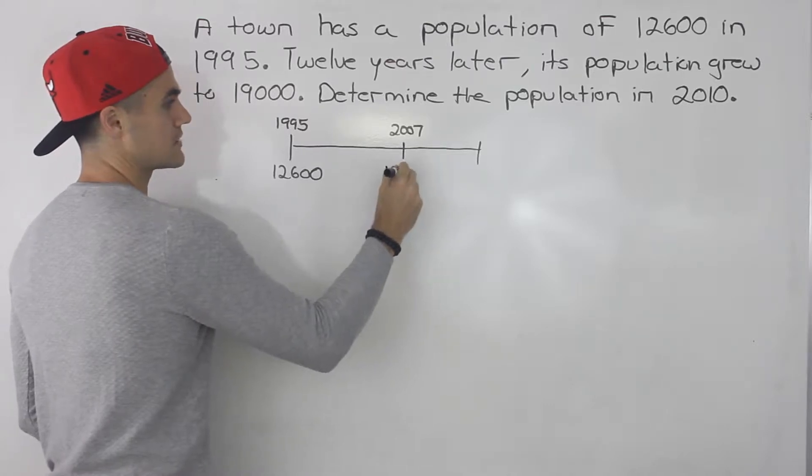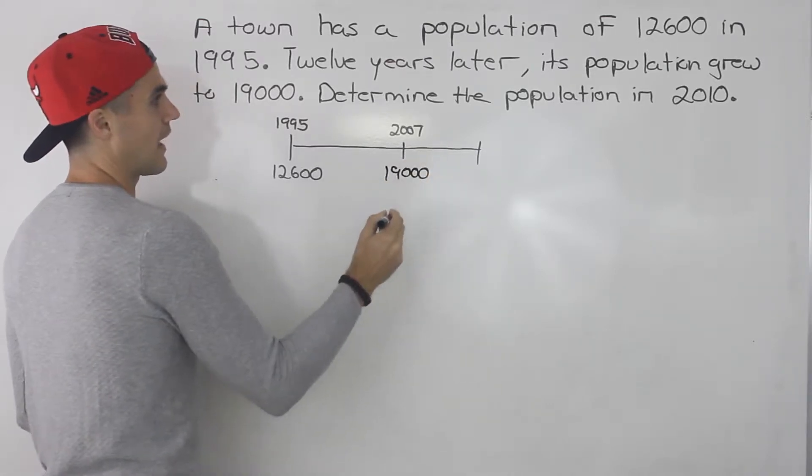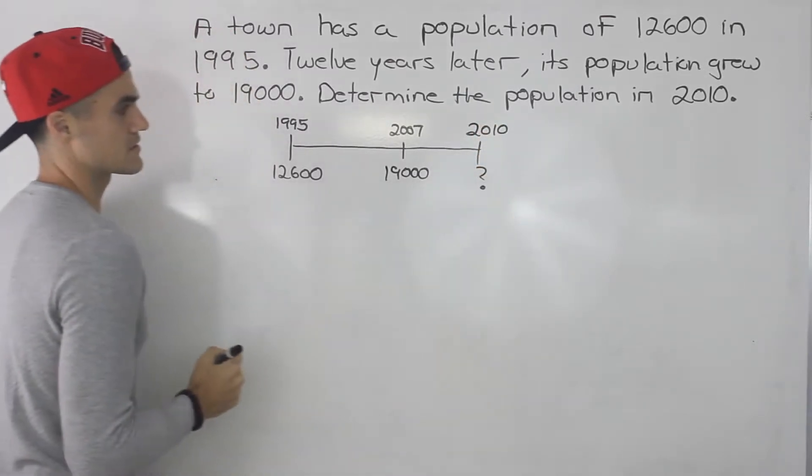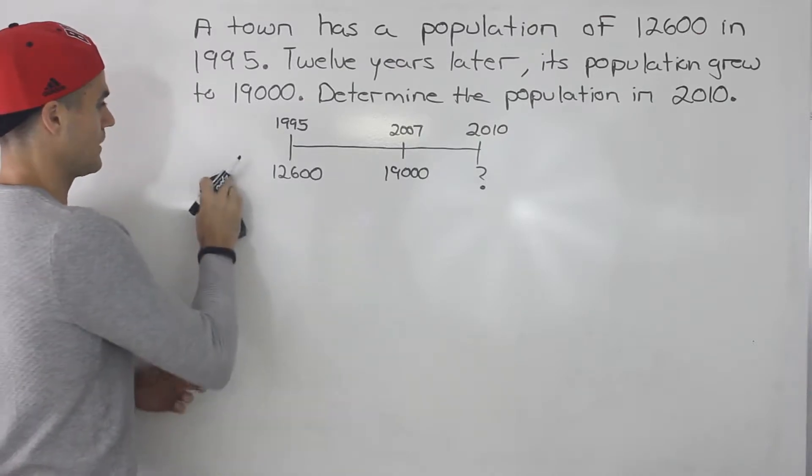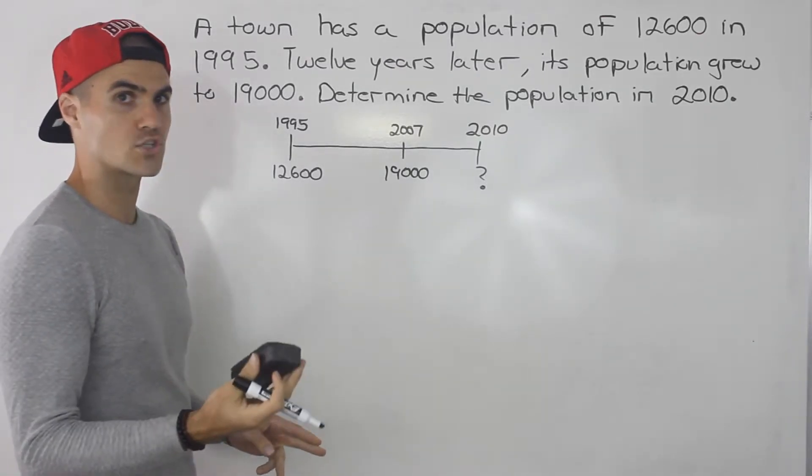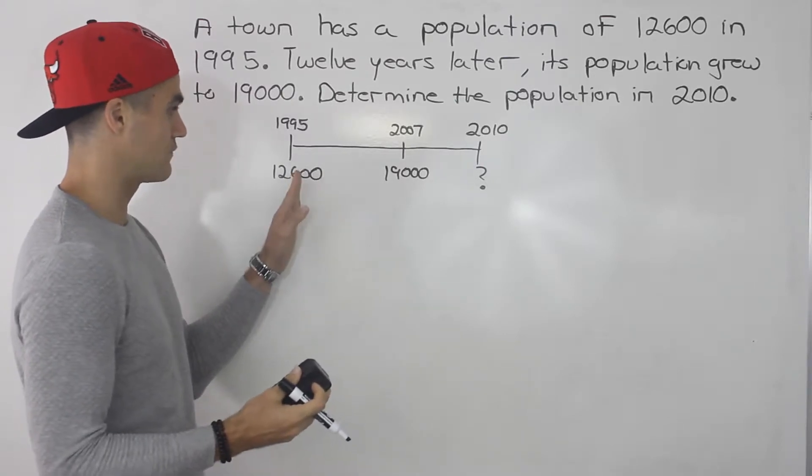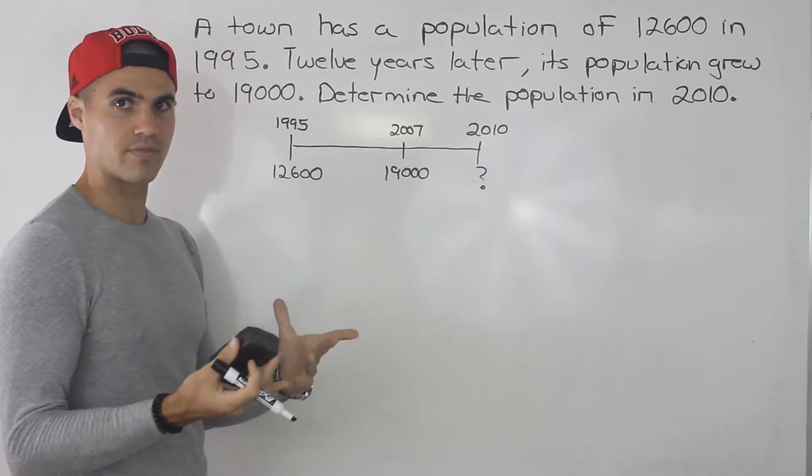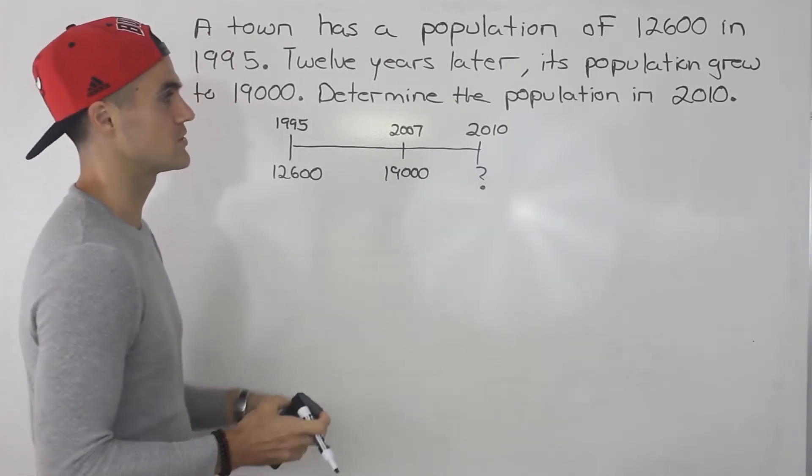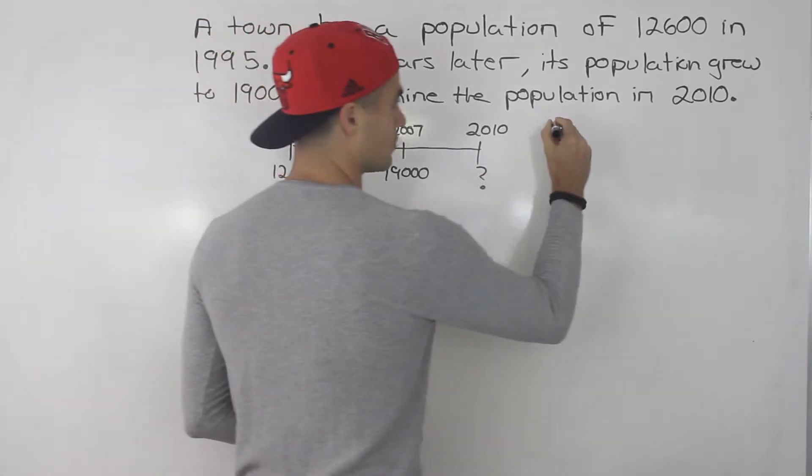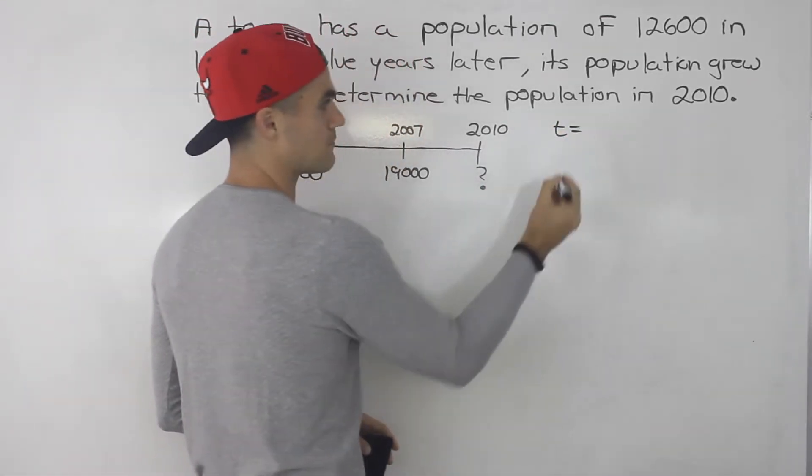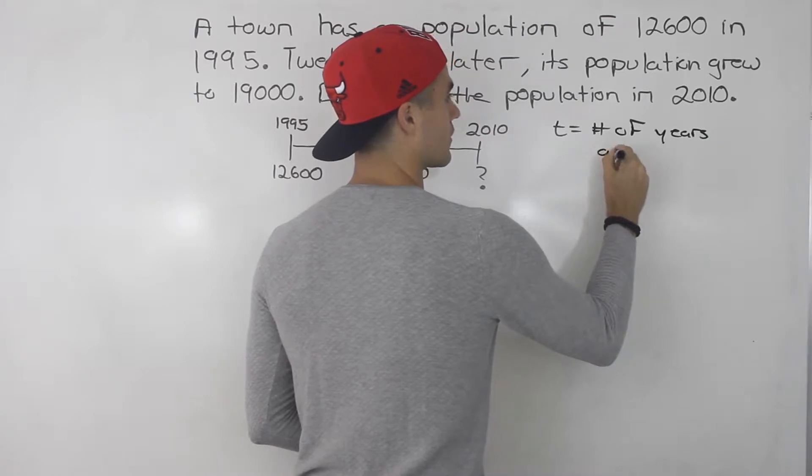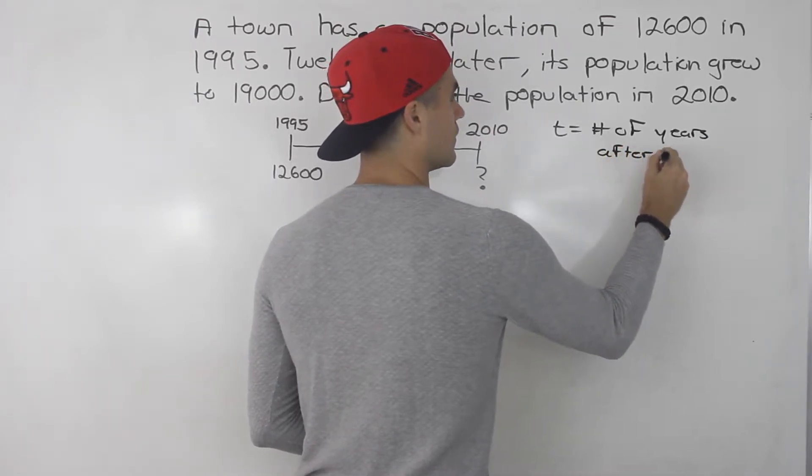The population is going to be 19,000 here, and then they're asking what is the population in 2010. So what we have to do is figure out by how much was the population growing every year to get from 12,600 to 19,000 in 12 years, and then with that rate of growth we could figure out what's the population going to be in 2010. So I'm going to introduce a variable t and I'm going to let that be the number of years after 1995.